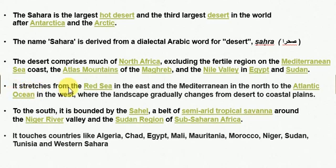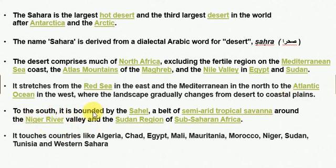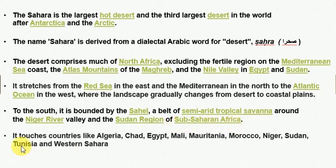It stretches from the Red Sea in the East and the Mediterranean Sea in the North to the Atlantic Ocean in the West, where the landscape gradually changes from desert to coastal plains. To the south, it is bounded by the Sahel, a belt of semi-arid tropical savannah around the Niger River valley and the Sudan region of sub-Saharan Africa.